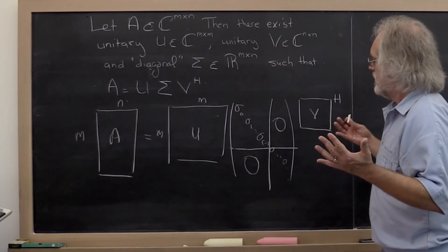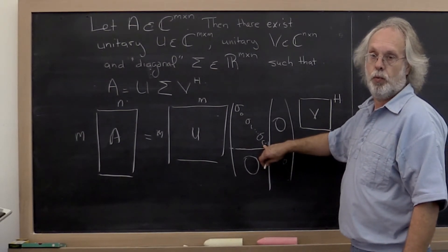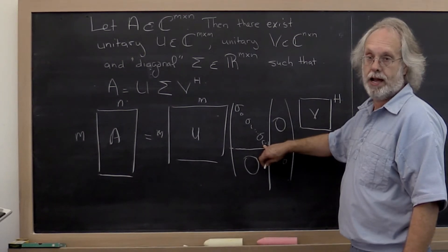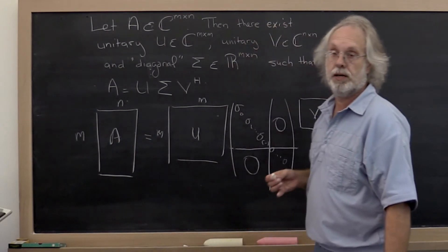Now r, we're going to find out, is actually equal to the rank of the matrix. Remember the rank of the matrix is the number of linearly independent columns that matrix A has.